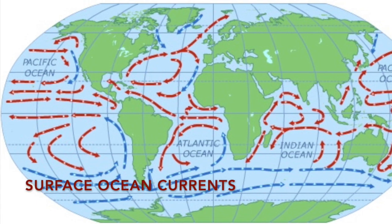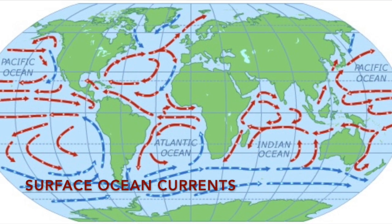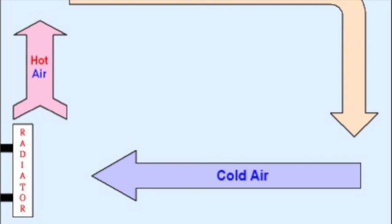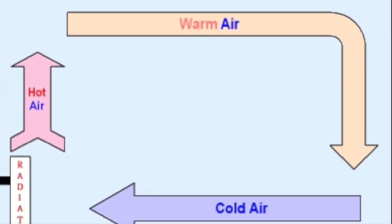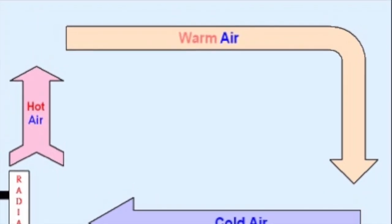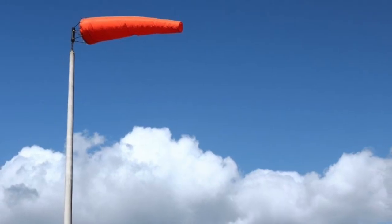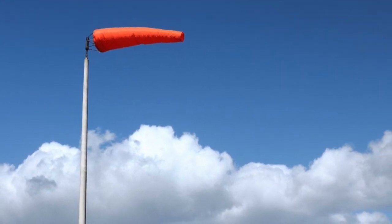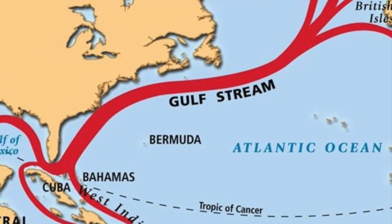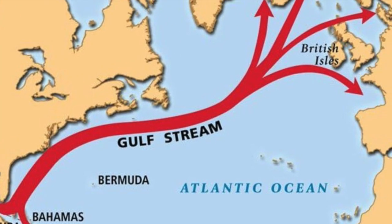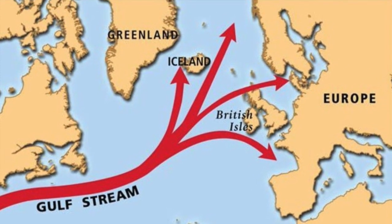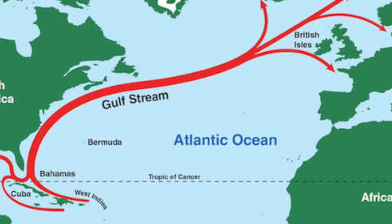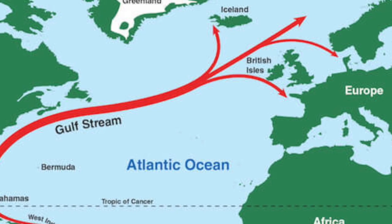Surface ocean currents are driven by wind that is fueled by the Sun. When the Sun heats air up, it expands and becomes less dense. The air has to rise and other air comes in as wind to fill its spot. One surface current, the Gulf Stream, carries a hundred and fifty times as much ocean water as the Amazon River does. It carries warm water from the Caribbean to Europe.